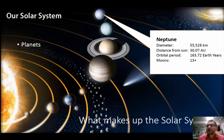The last of the planets that we are going to talk about is Neptune. Neptune has a diameter of 55,528 kilometers. It is 30.07 astronomical units from the sun. Its orbital period is 163.72 Earth years and it has at least 13 moons. These last four planets are known as the gas giants because they are mostly made of gas.